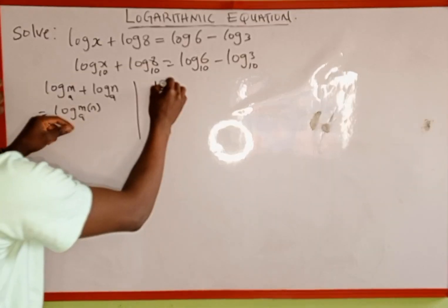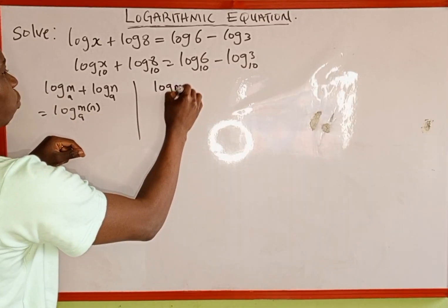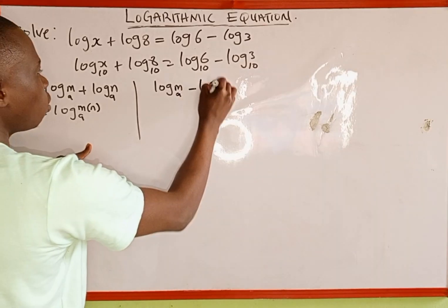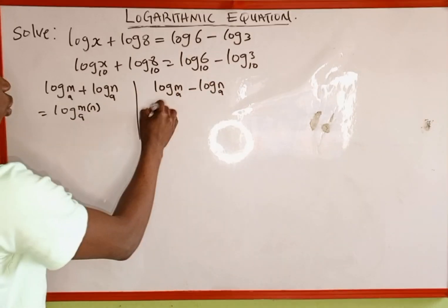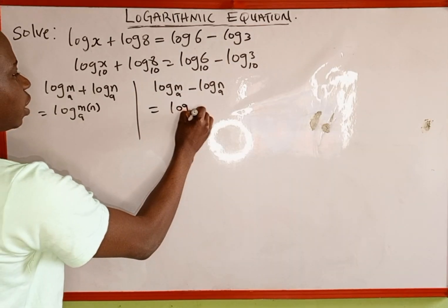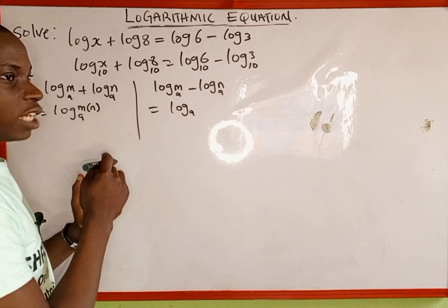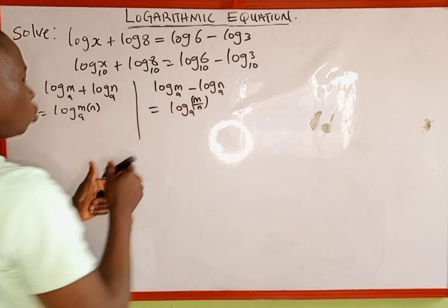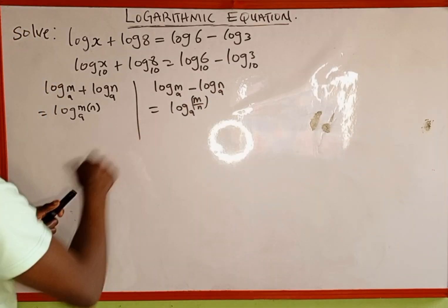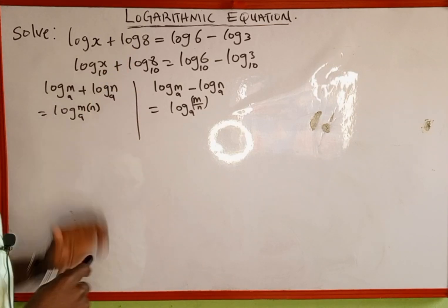Also, when we have log of m to base a minus log of n to base a, this is subtraction. What we do is we write log to base a, then we divide the two variables m and n. So we divide m by n. These are the two properties of logarithm we are going to use in this equation.